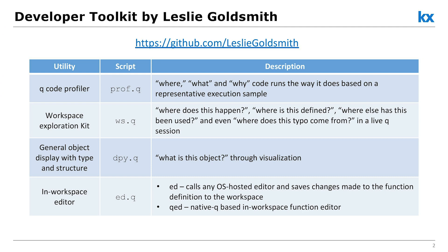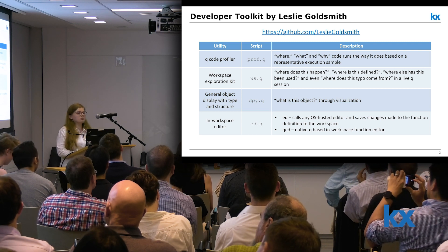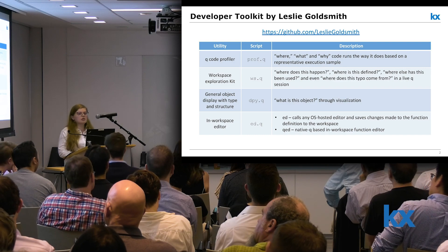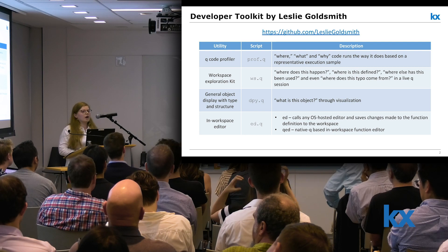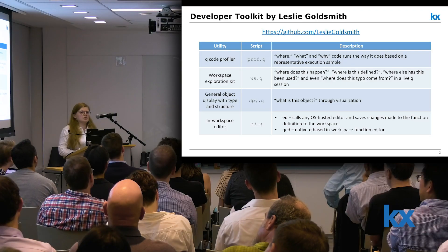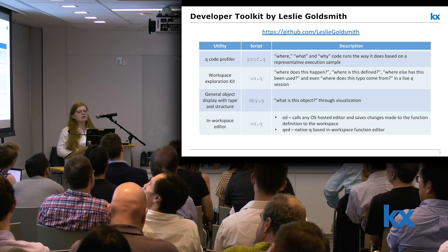The developer toolkit consists of four scripts. The first is the queue code profiler, which allows us to understand what our code is spending time doing. The second, wuss.queue, contains routines for workspace exploration — answering questions like where a certain thing is defined, where else it's used, and where a particular type comes from. The third is a display utility, which helps us understand what a particular queue object is by visualizing its structure and explicitly declaring its type. Finally, ed.queue contains two flavors of an in-workspace editor for functions, allowing us to easily modify functions without having to reload files in our queue session.